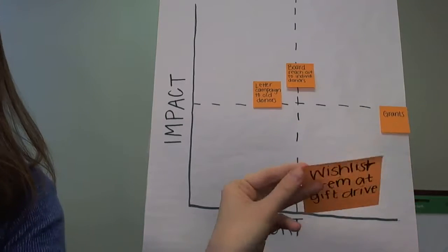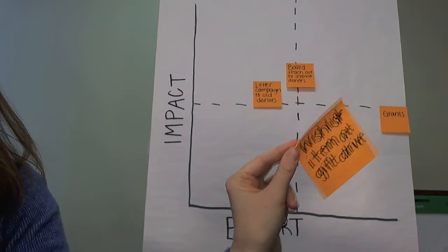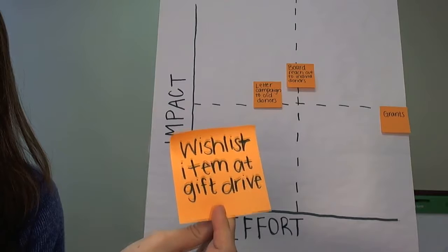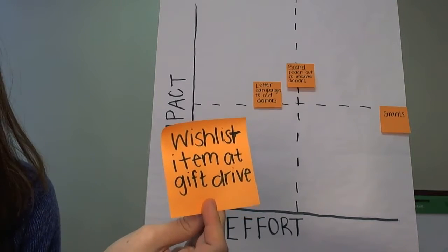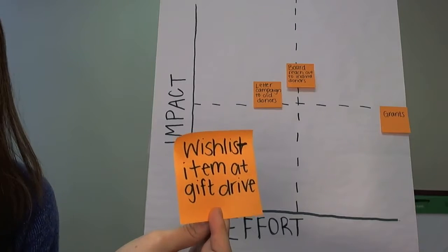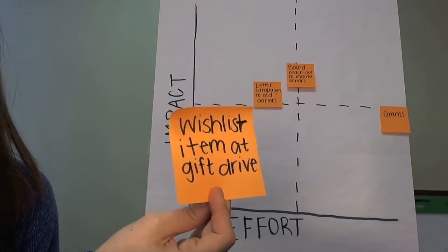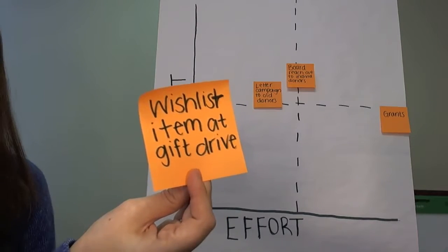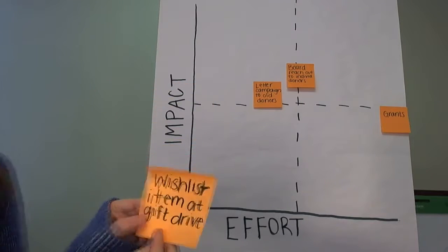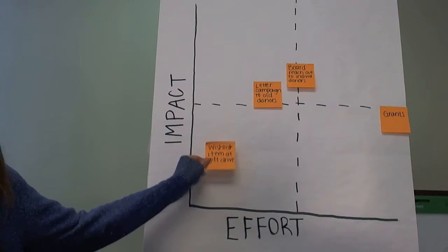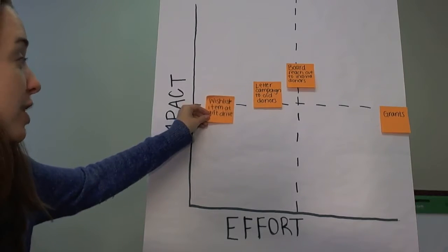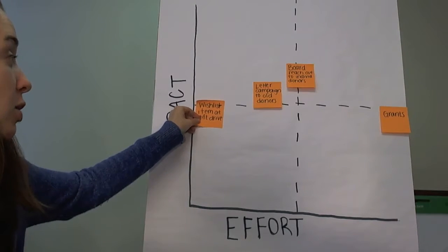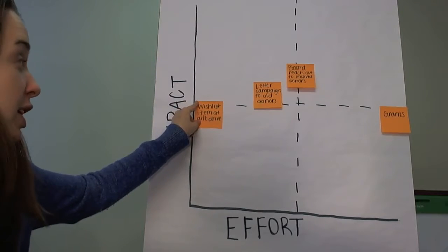Somebody suggested putting computers as a wish list item at our gift drive. It's almost the holiday season and the after-school program always does a gift drive asking for items for the program. Donors always give during the holiday season, so you list a few Chromebooks on the wish list. That is very low effort because you just put it on the list and hope you get it. Impact is questionable — maybe you get it, maybe not. So effort is very low but impact is very questionable.